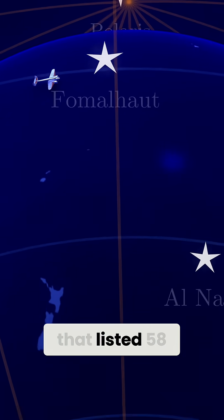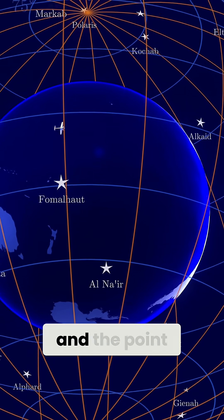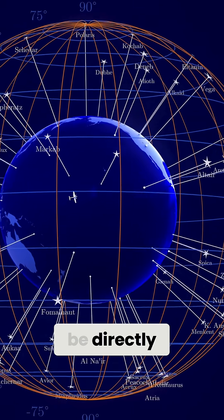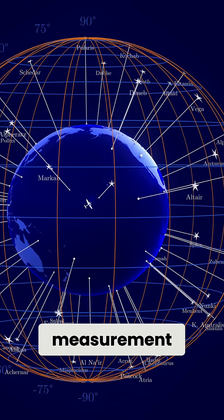He had an almanac that listed 58 navigation stars and the point on Earth each one would be directly overhead for the day and time of his measurement.